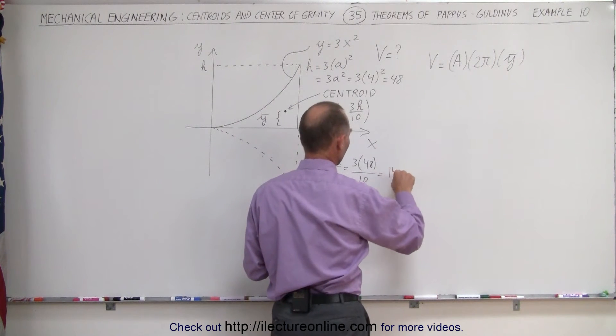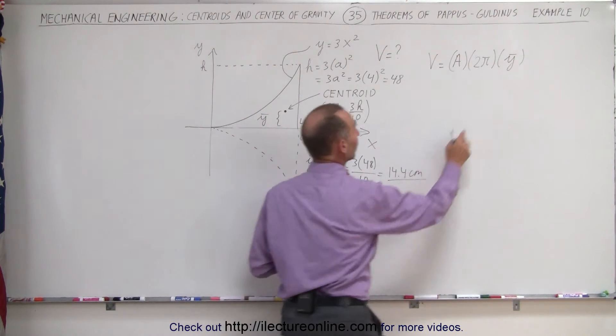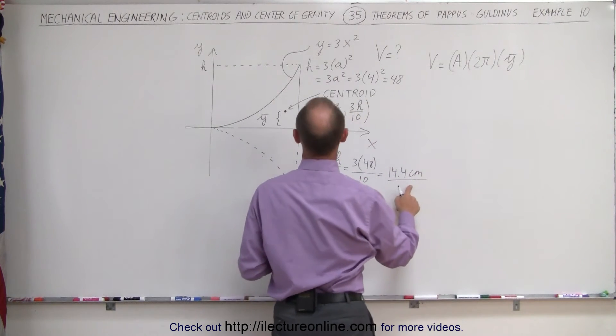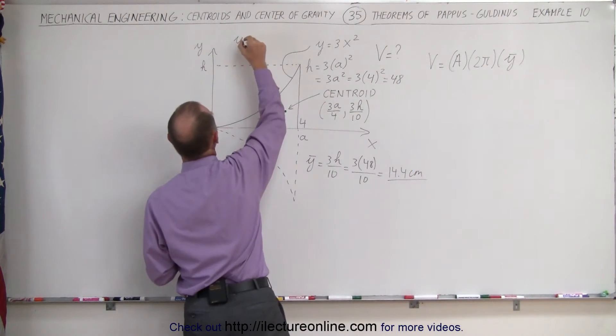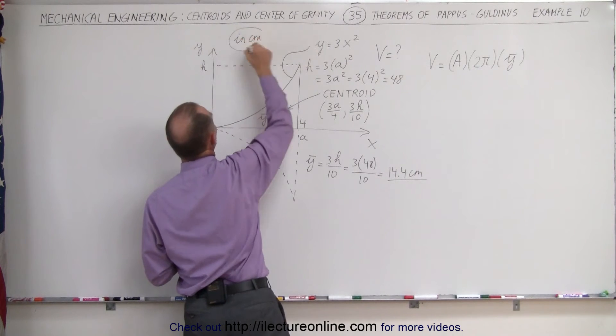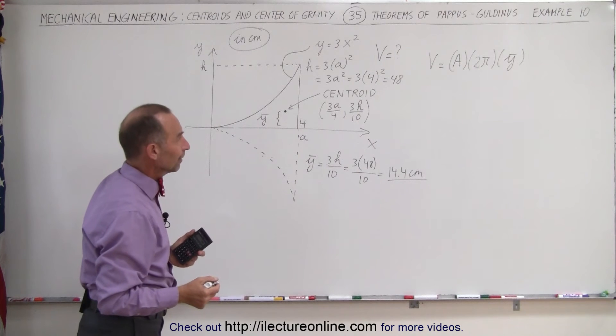That's the distance to the centroid in the vertical direction away from the x-axis. That gives us this value right here. I did put centimeters there but I'm not sure if these are centimeters. Let's just say all units in centimeters so then we can go ahead and at least put a value there.